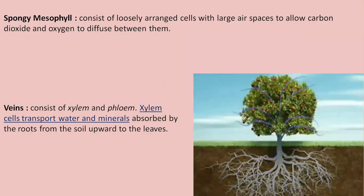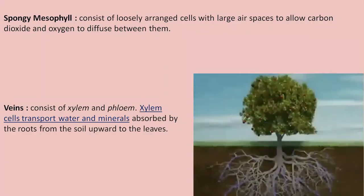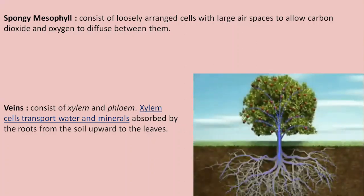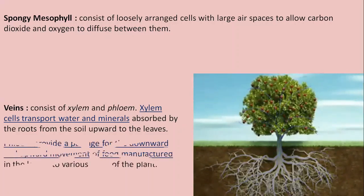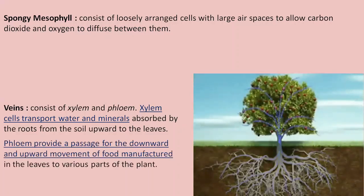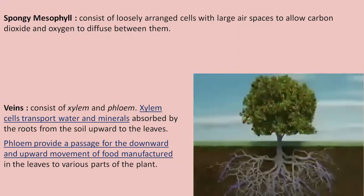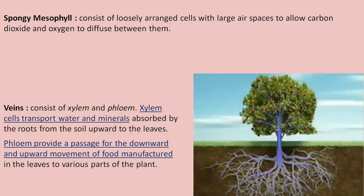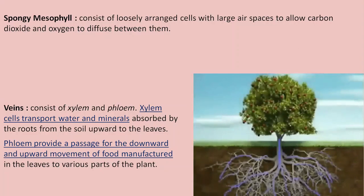Water in the leaf is used to prepare glucose during photosynthesis, or it is lost as water vapor in the process of transpiration. Phloem provides a passage for the upward and downward movement of food — the glucose manufactured in the leaves — to various other parts of the plant. This food acts as an instant energy source or is stored in the form of starch.